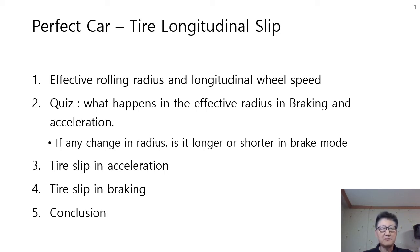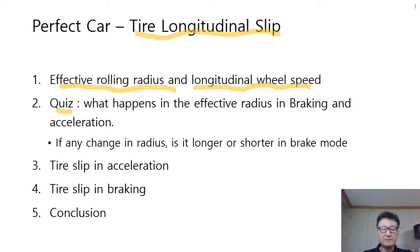Hi guys. This time I will explain tire longitudinal slip. Before getting into the main topic, we have to know the concept of effective rolling radius and longitudinal wheel speed. I prepared a quiz: what happens to the effective radius in braking and acceleration? Is it longer or shorter in braking mode? Then I will explain tire slip in acceleration and tire slip in braking, and finally we end up with our conclusion.